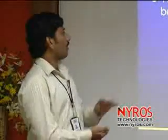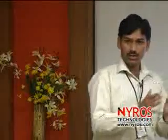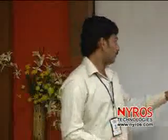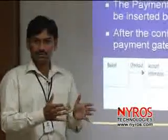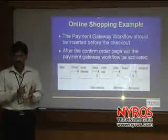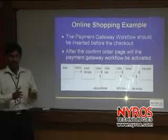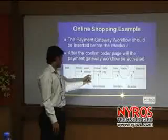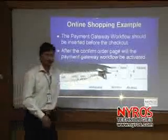Online shopping example: whenever we select a product, finally we have two buttons — Checkout and Order. Before going to Checkout, it will check the account information of the user — whether he has a bank account, any credit card, and in that bank, whether he has a sufficient balance. After verifying account information, it will confirm the order. After that, Checkout — the final order will be placed.